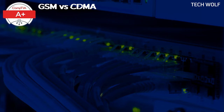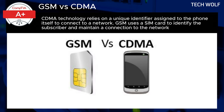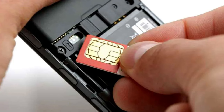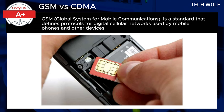Let's discuss what is GSM and CDMA and what are their differences. GSM, or Global System for Mobile Communications, is a standard that defines protocols for digital cellular networks used by mobile phones and other devices.